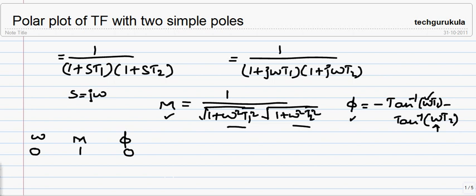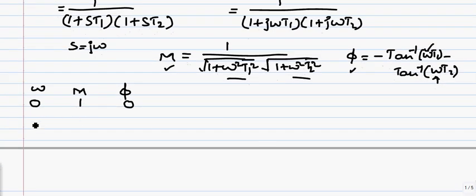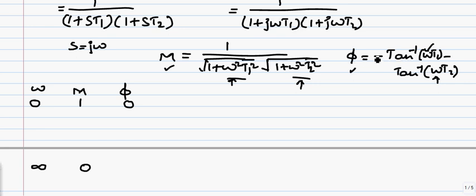When ω tends to infinity, the magnitude tends to 0. The phase angle: tan⁻¹ of infinity is 90 degrees, and since there is a minus sign for each term, φ becomes minus 90 minus 90, which equals minus 180 degrees.